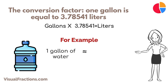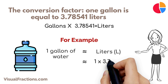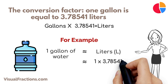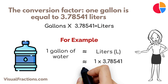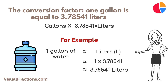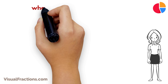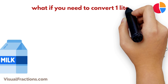Say you have one gallon of water that you need to convert to liters. We start by multiplying one by the conversion factor of 3.78541. This gives us approximately 3.78541 liters — and that's it, we're done. One gallon of water is equal to approximately 3.78541 liters.